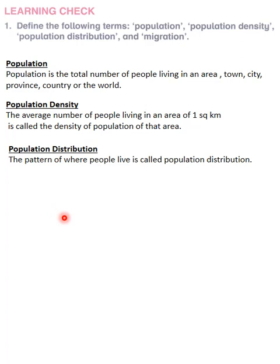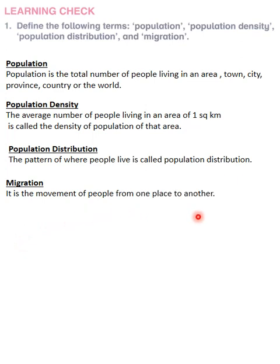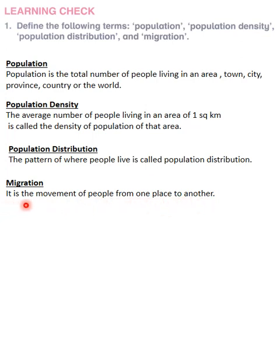The next and last term is migration. Migration means the movement of people from one place to another. It will be more appropriate to write that it is the permanent movement of people from one place to another, though writing 'movement of people from one place to another' is also acceptable.